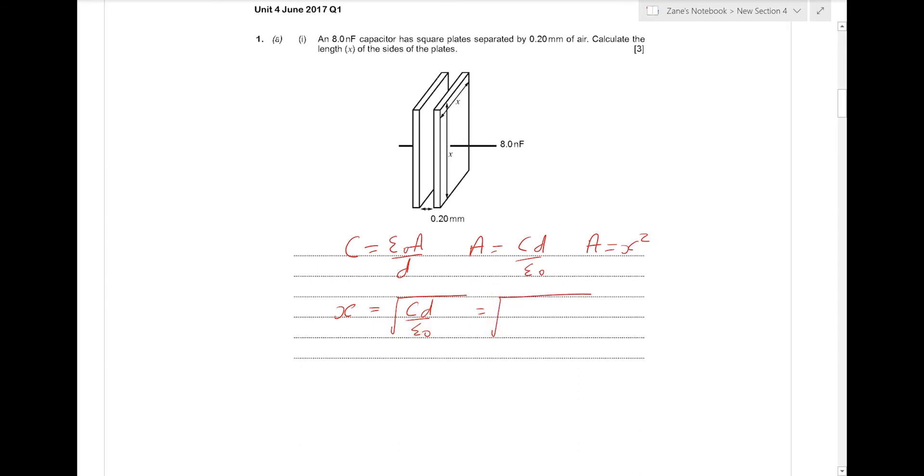Substitution of figures: the capacitance 8 nF, so 8 times 10 to the minus 9. D, 0.2 mm, so don't forget the conversion to meters. And epsilon 0, 8.85 times 10 to the minus 12.